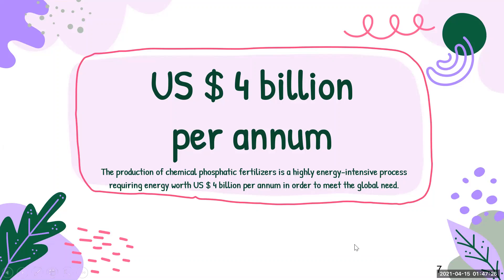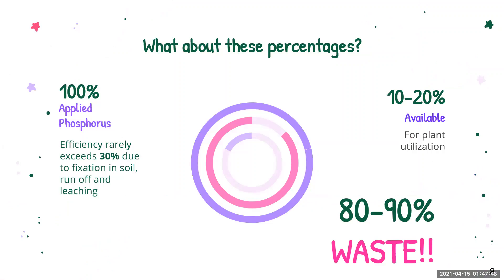The main problem is that the production of these chemical phosphatic fertilizers is a highly energy-intensive process, estimated to require energy worth around 4 billion US dollars per annum to meet future global needs. The situation is further compounded by the fact that almost 80 to 90 percent of added phosphatic fertilizer is precipitated by metal ion complexes present in the soil, and only 10 to 20 percent of it is utilized by plants.